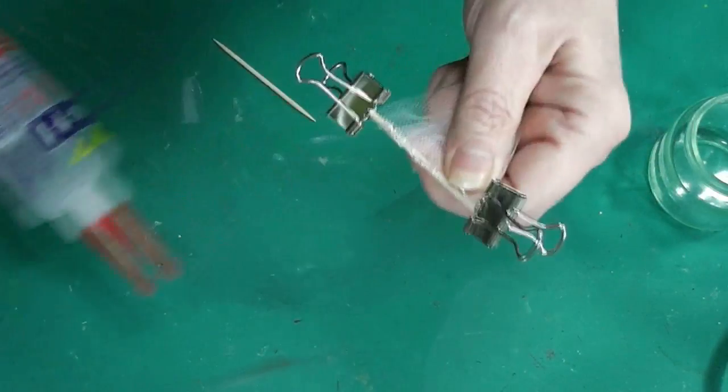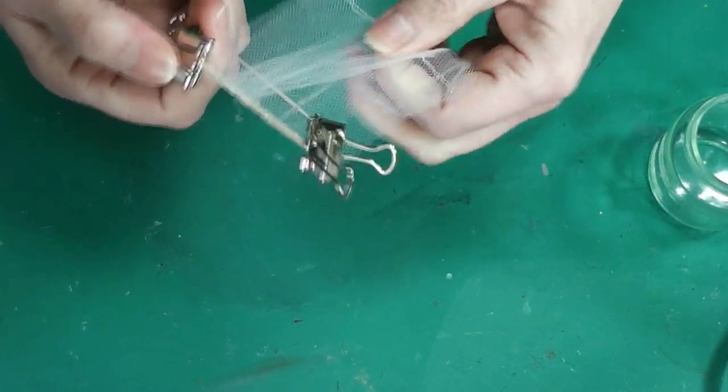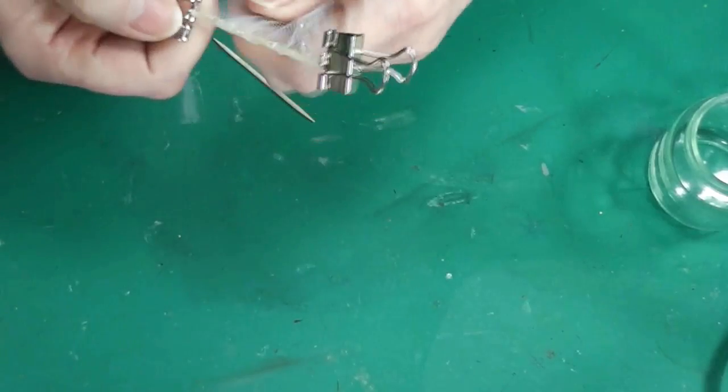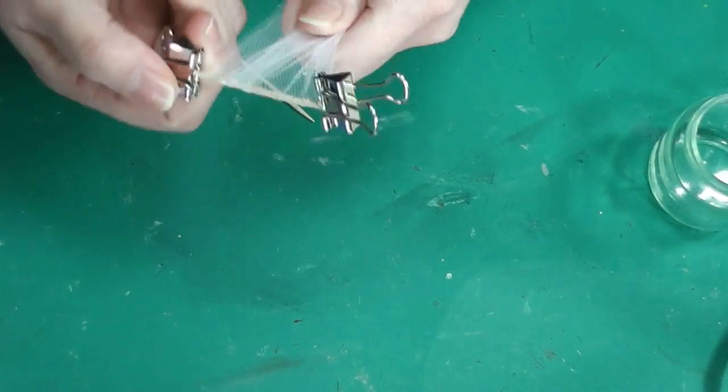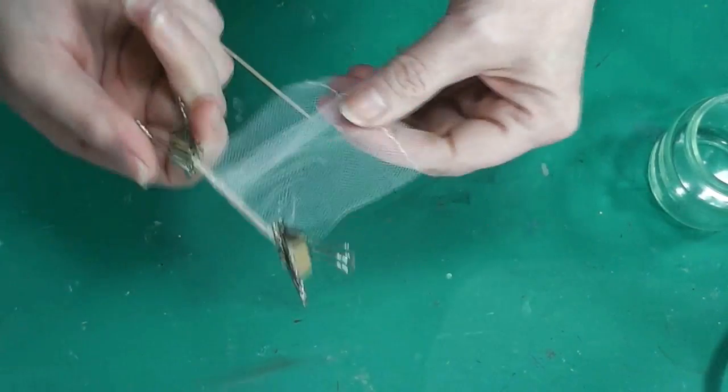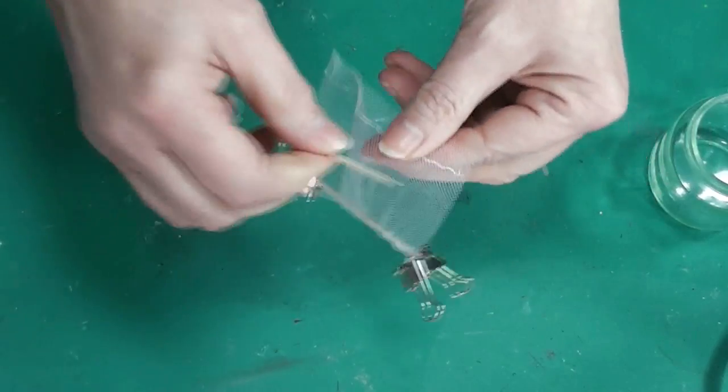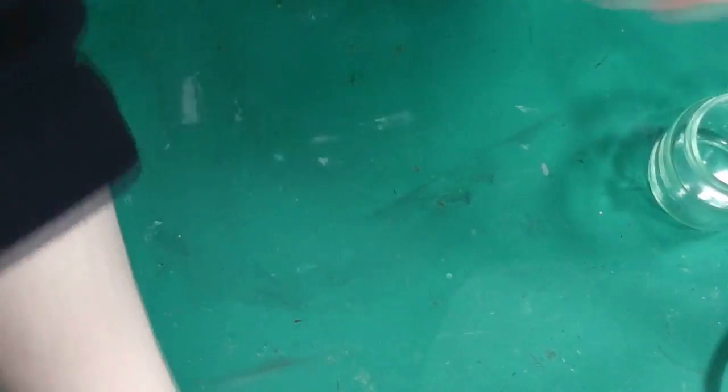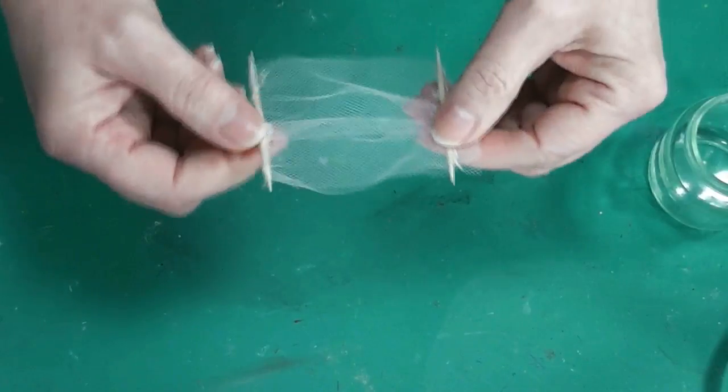When that glue dries, and it'll take a while, it won't take very long. When that dries, take the clamps off, put them on the other toothpick, and do the same thing on the other end, down by the seam, so you have something that looks like this.